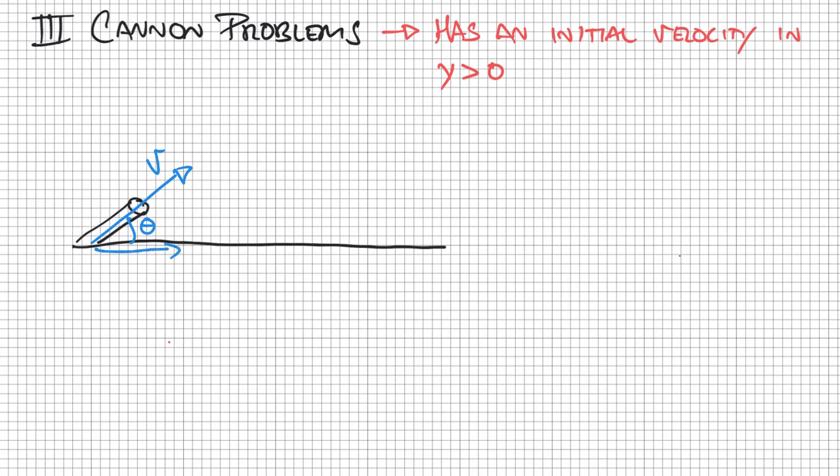I can then break this into its velocity in the x and its velocity in the y. So those are going to be my components of my initial velocity.